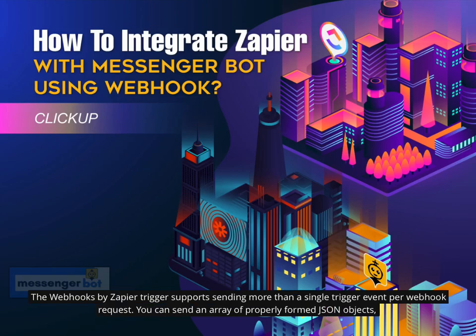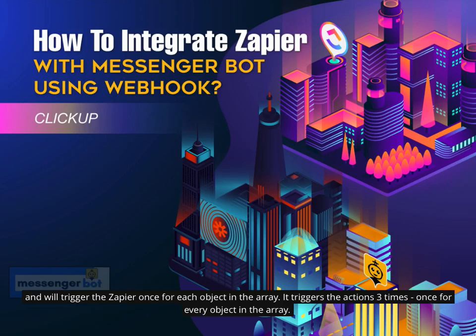The Webhooks by Zapier trigger supports sending more than a single trigger event per webhook request. You can send an array of properly formed JSON objects, and it will trigger Zapier once for each object in the array, triggering the actions once for every object.